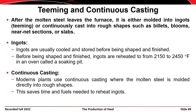Teeming ingots is probably an older process. You have molds filled with molten steel, the steel is allowed to cool and harden, and then when you want to form it into a rolled shape or plate, you have to reheat the ingots back to a high temperature. That reheating takes a lot of energy, so it's not as economical as continuous casting. When they reheat these ingots, they put them in an oven called a soaking pit and let them soak until they reach the required temperature.